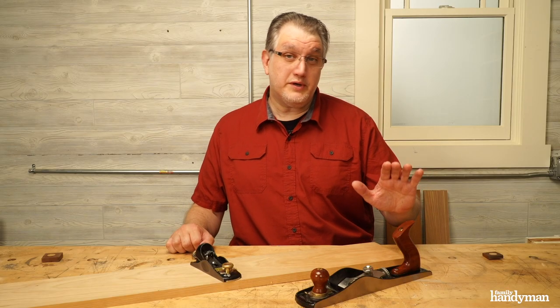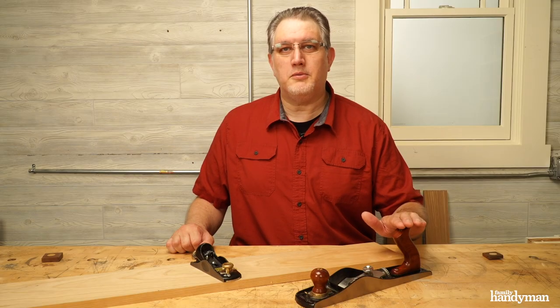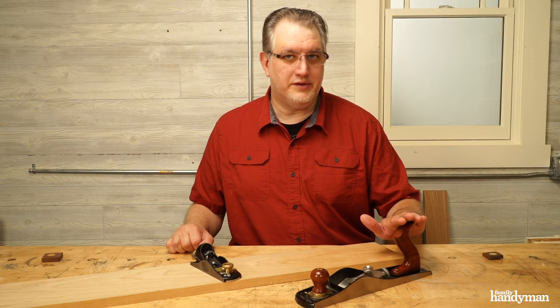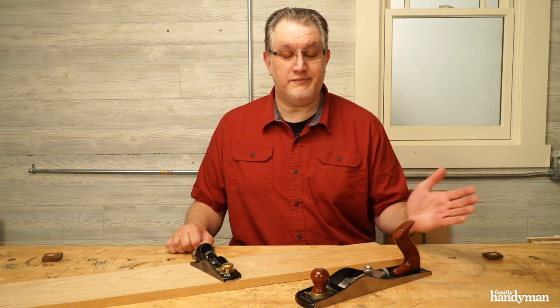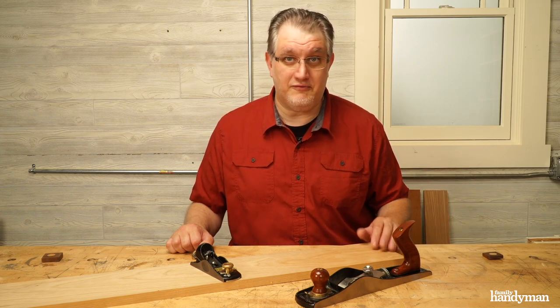Now if you're going to explore finer woodworking, the number 62 low angle jack plane from Wood River is probably my favorite hand plane on the market. It's super versatile, and for about 200 bucks you have a hand plane that will do almost anything for you.